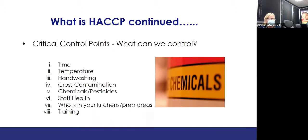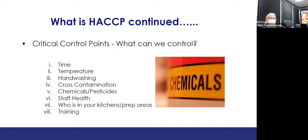Beef or pork roast only needs to reach 145°F, and you must keep the thermometer in place — it must maintain 145°F for four minutes. Chicken and poultry items must go to 165°F. Ground meats such as pork, beef, and fish must go to 155°F for 17 seconds. Poultry, no matter what form, must be cooked to 165°F for 15 seconds.